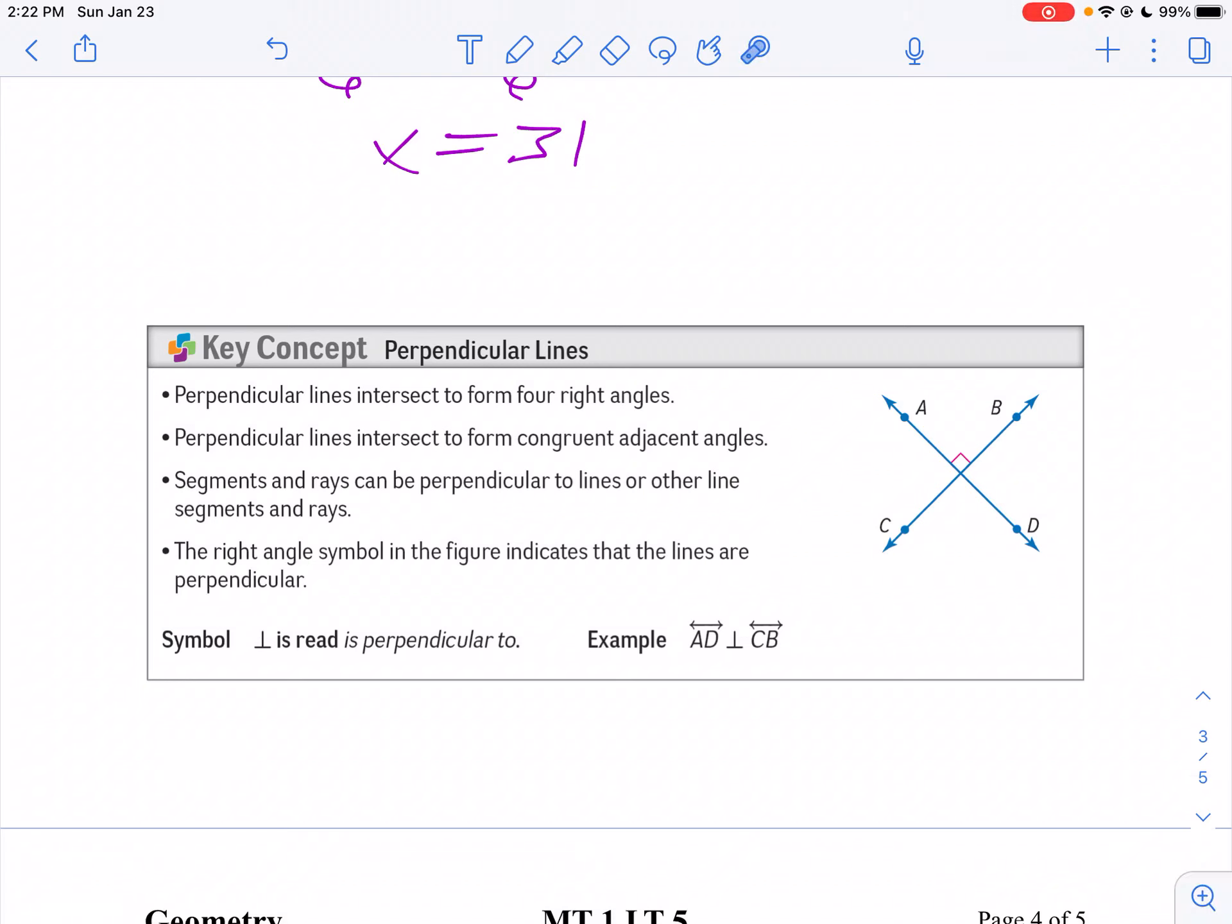By definition, perpendicular lines are two lines that intersect and form right angles. The symbol for perpendicular looks like an upside down capital T.